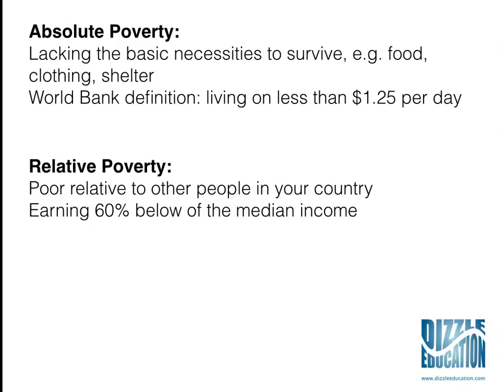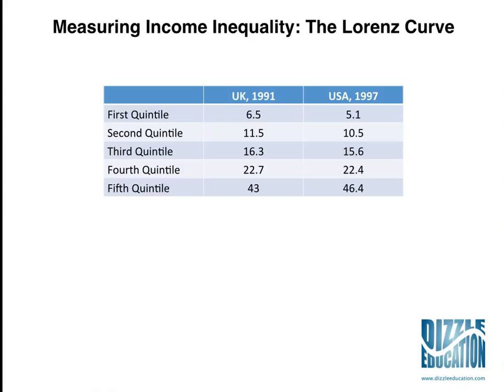That covers the key things you need to bear in mind in terms of measuring poverty. Moving on to look at income inequality, there are two different ways you can measure it and they're both closely related. The first one we're going to look at is the Lorenz curve. To calculate your Lorenz curve, you first need to look at the data for the different quintiles of your population.